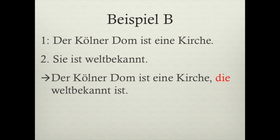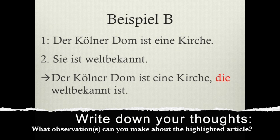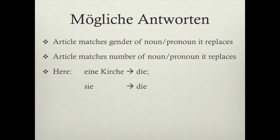Let's look at another example. Beispiel B — first sentence: 'Der Kölner Dom ist eine Kirche.' Second sentence: 'Sie ist weltbekannt.' And last: 'Der Kölner Dom ist eine Kirche, die weltbekannt ist.' Notice the highlighted article. The article matches the gender of the noun or pronoun it replaces, as well as the number. Here we had 'eine Kirche', the pronoun 'sie', which is replaced by the article 'die' — in this case the relative pronoun 'die'. It looks exactly like the article.